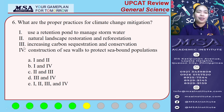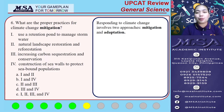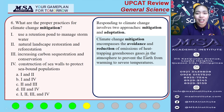Number six: what are the proper practices for climate change mitigation? Climate change is a long-term change in average weather patterns. In responding to climate change, it involves two approaches. The first is climate change mitigation, which encompasses the avoidance and reduction of emissions of heat-trapping greenhouse gases — such as carbon dioxide and methane — in the atmosphere, to prevent the Earth from warming to severe temperatures.